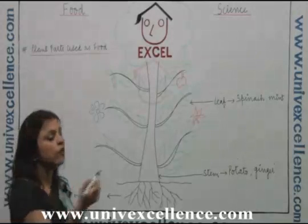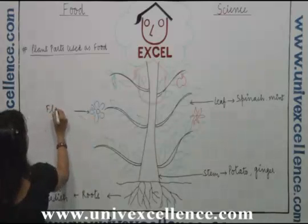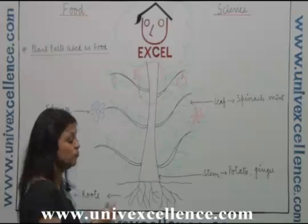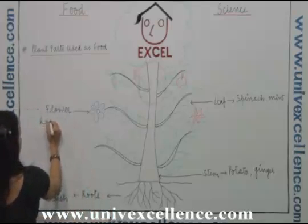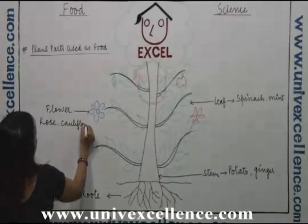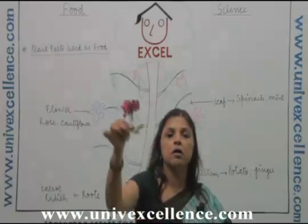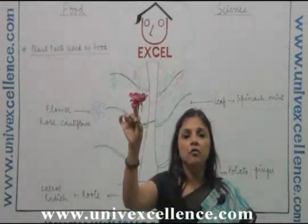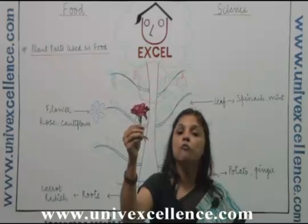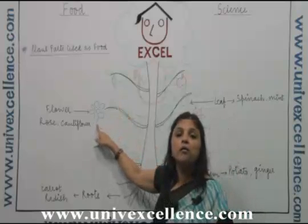In some plants, the food gets stored in the flower. The food gets stored in the flower of the plant and we eat it as food — like rose and cauliflower. In the petals of rose, we have stored food which we process and make into different kinds of food items.